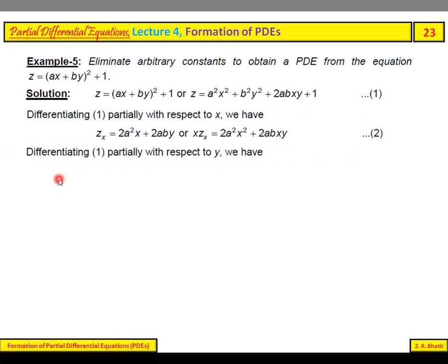Now differentiating partially with respect to y, we get z_y = 2b²y + 2abx, or multiplying by y, yz_y = 2b²y² + 2abxy.